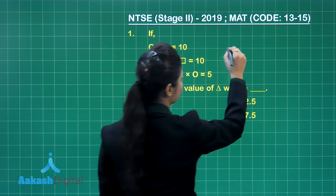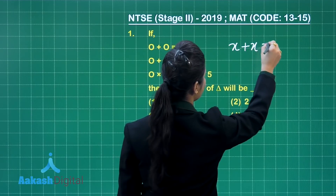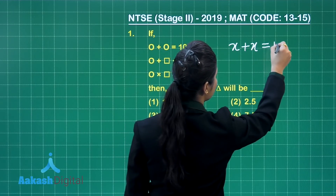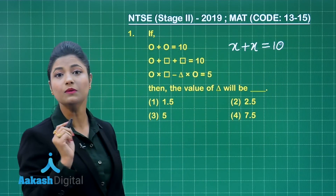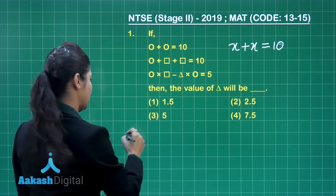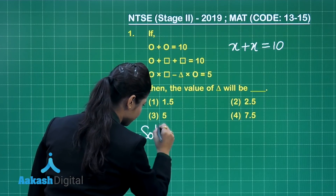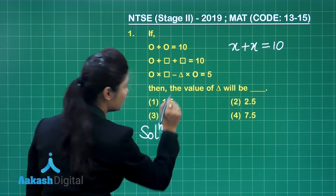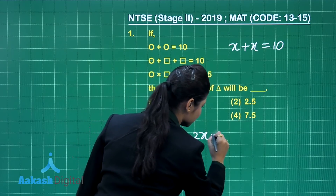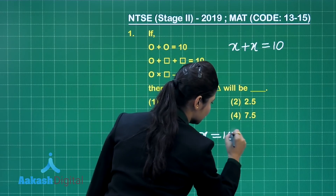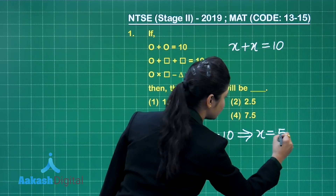Let us consider that the circle represents x. So x plus x equals 10, giving us the first equation: 2x equals 10, resulting in the value of x equal to 5.